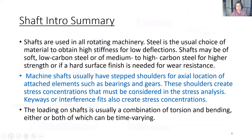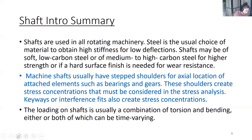That needs to go in your analysis tool. Shafts are used in all rotating machinery. Steel is usually the choice of material to obtain high stiffness for low deflections. Shafts may be soft low-carbon steel or medium-to-high carbon steel for higher strength or if a hard surface finish is needed for wear resistance. Machine shafts usually have stepped shoulders for axial location of bearings and gears, but these shoulders create stress concentrations. Keyways and interference fits also create stress concentrations. The loading on shafts is usually a combination of torsion and bending, either or both of which can be time varying — meaning we have to do a fatigue analysis.